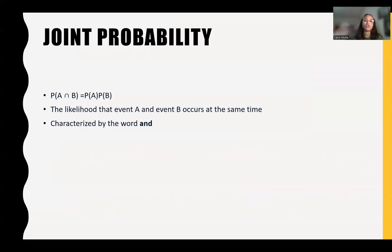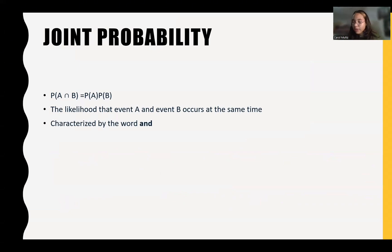Now let's talk about joint probability. Joint probability refers to the likelihood of event A and event B occurring at the same time. So if we have a word problem, we want to find the keyword AND. The formula states that the probability of event A times the probability of event B is going to be the joint probability.